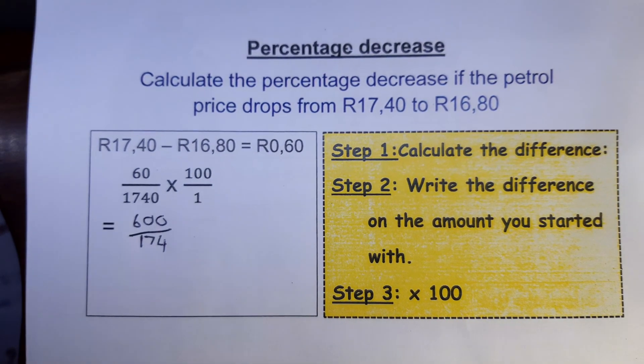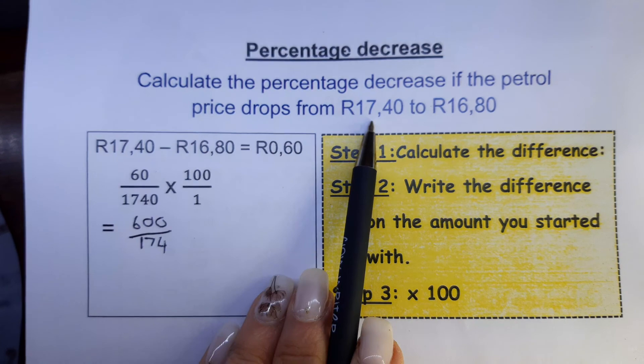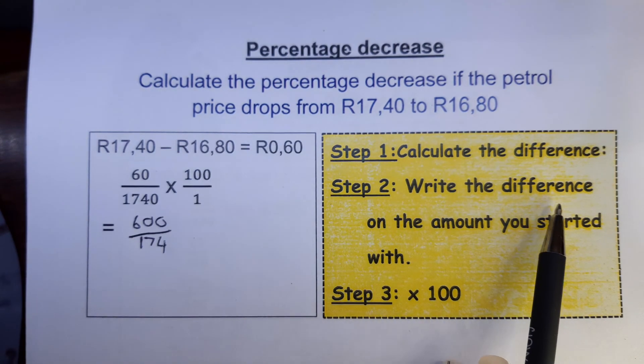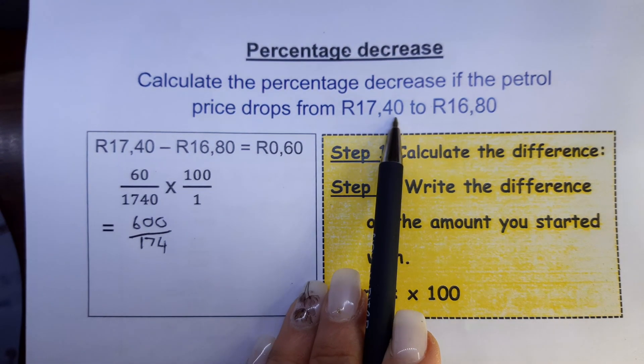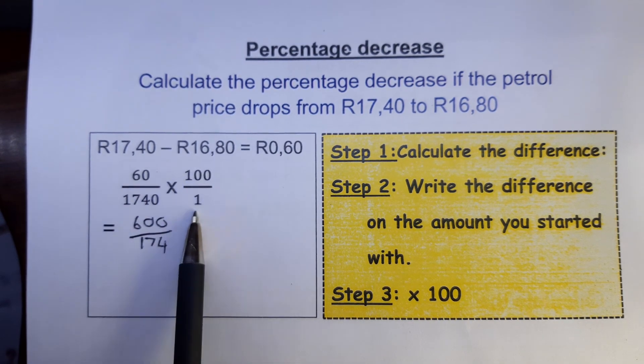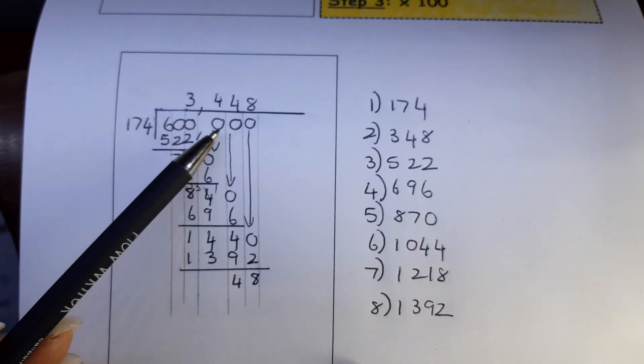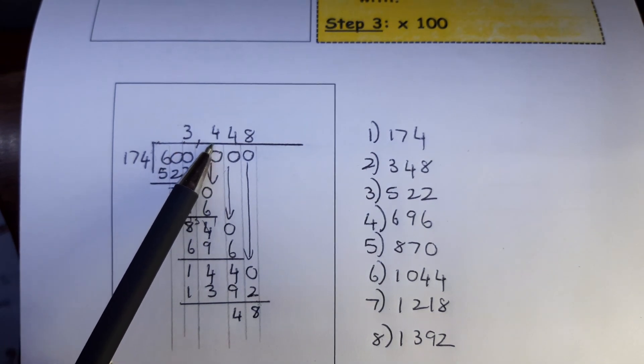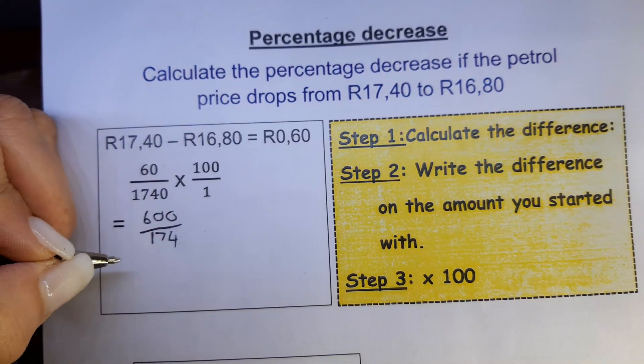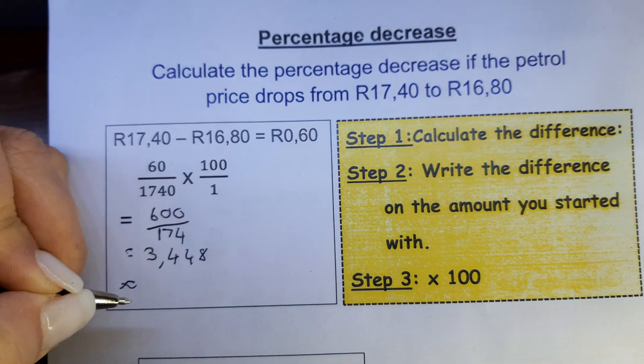When you have to calculate the percentage decrease, you first get the difference, biggest minus the smallest. Although it started with 17 rand 40, you say the big one minus the small one. So the decrease was 60 cents. But then step 2, write the difference on the amount you started with. So it was 17 rand 40 cents. So I put the 60 cents on the 17 rand 40, make it cents. Then you calculate it. I had to do a long division calculation here. So use your cue board and then you divide, you bring down the zeros. So you only have to calculate to 3 places. Only if they indicate to 4 or 5, then you continue. But for 3 places. So the answer here will be 3.448.